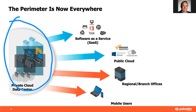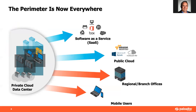Traditionally, the idea of security was: everybody who's trusted is inside and everything I need is inside — all I've got to do is stop bad stuff from coming in. Well, that's changed over the years. The idea of Software as a Service — SaaS — with things like Google Drive, Office 365, Salesforce, and ServiceNow means all that data is now up in the cloud. It's not behind a network perimeter. It has to be secured.